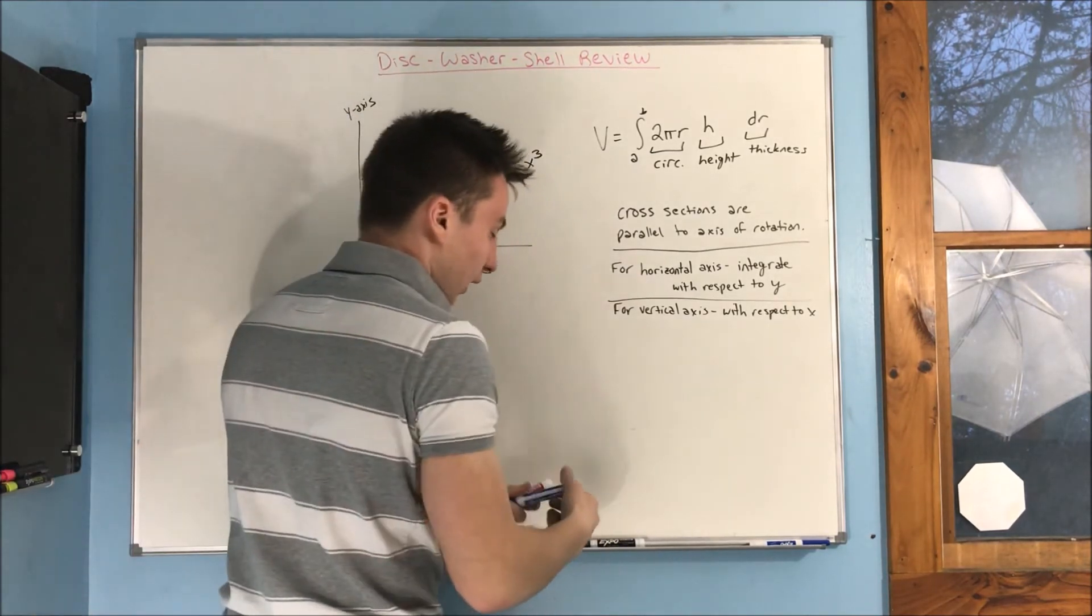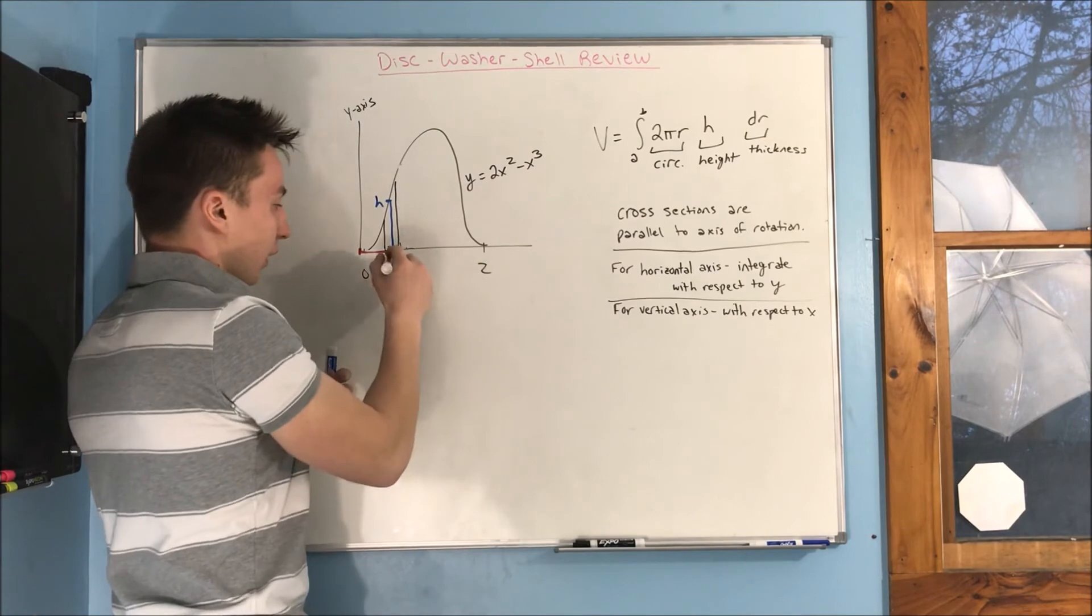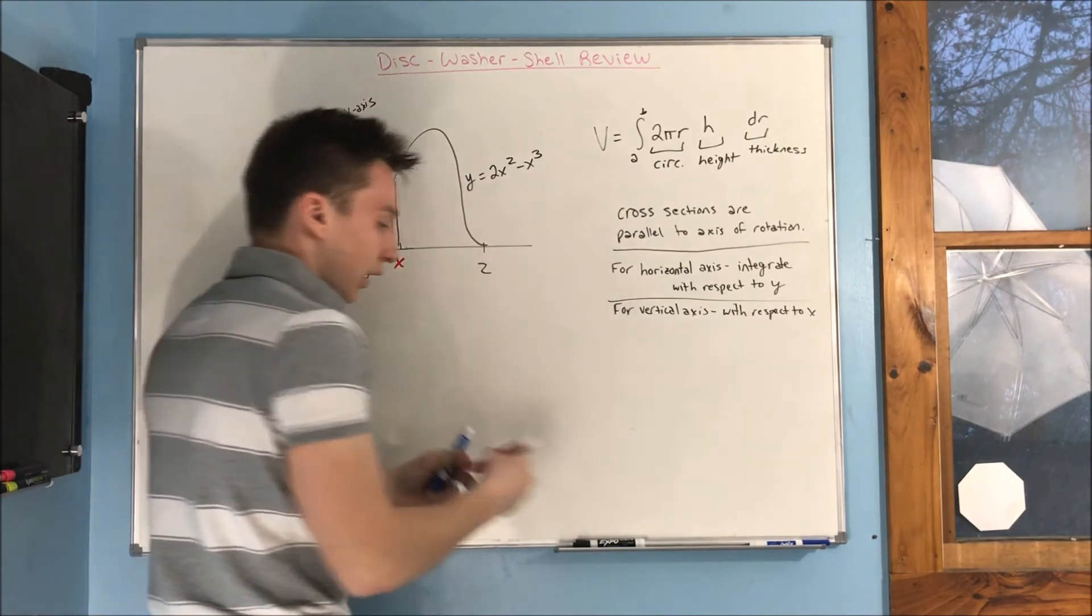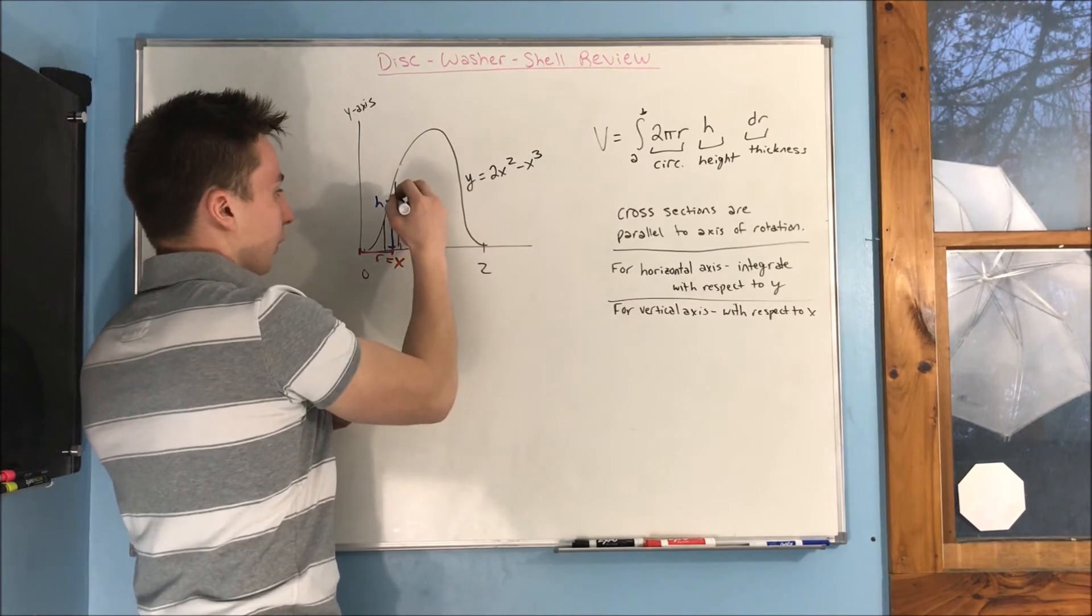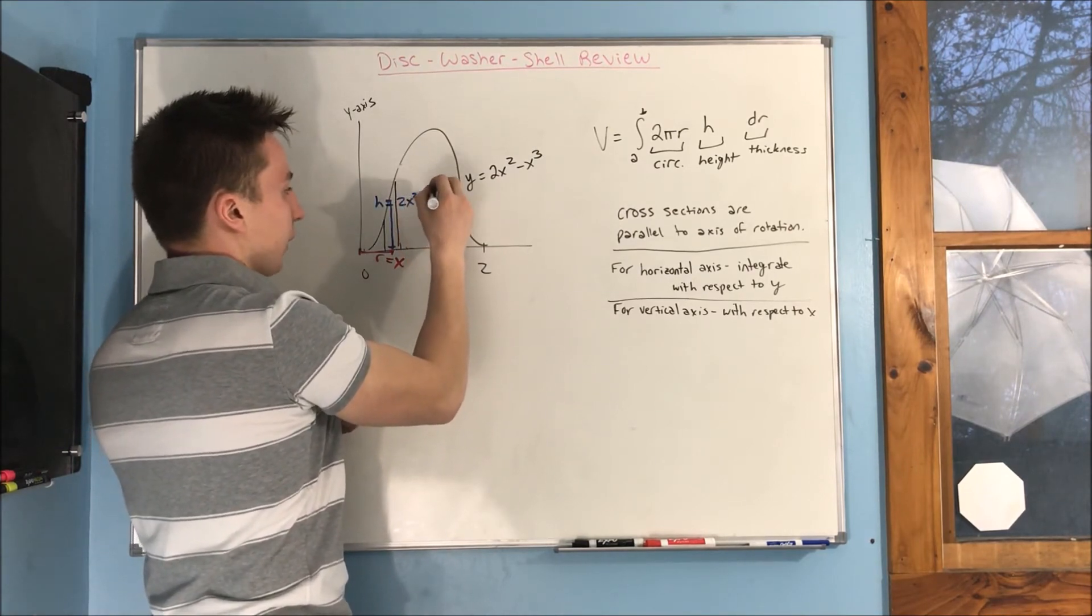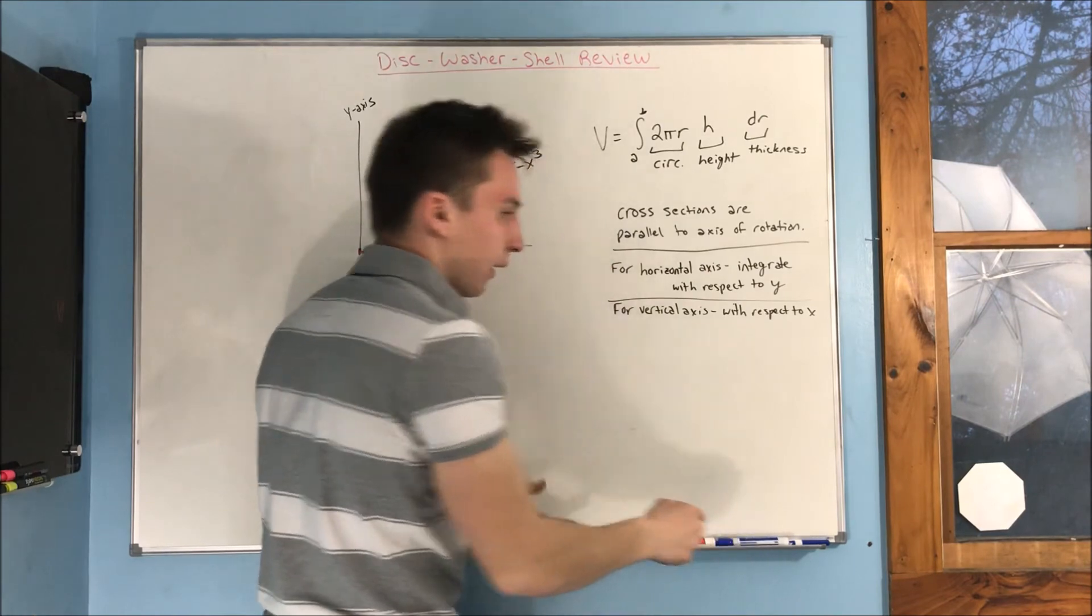For instance, the radius of this cylinder is x, and the height of this cylinder is equal to 2x squared minus x cubed. So, that's just a quick example there, and that basically sums it up.